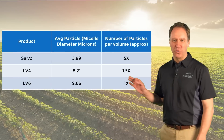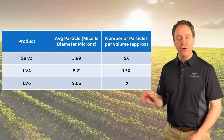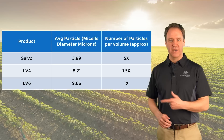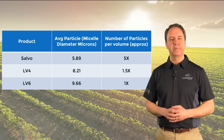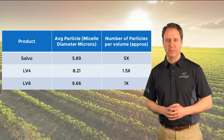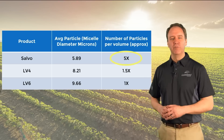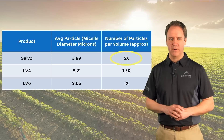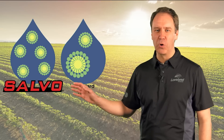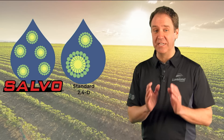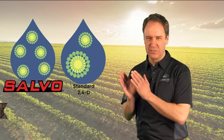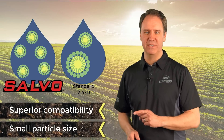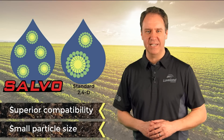In this chart, we took a sample of Salvo, LV-4, and LV-6 and measured the average micelle particle size of each. We then measured how many particles were in each spray droplet. As you can see, Salvo provides nearly five times the amount of 2,4-D particles per drop. This allows Salvo to get more herbicide into the plant, which leads to increased control. With its superior compatibility and small particle size, Salvo is the best choice for any 2,4-D ester application.